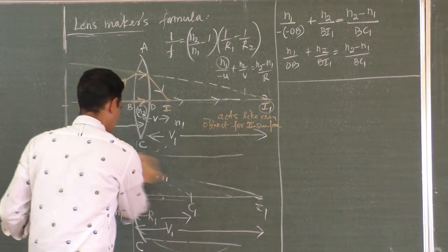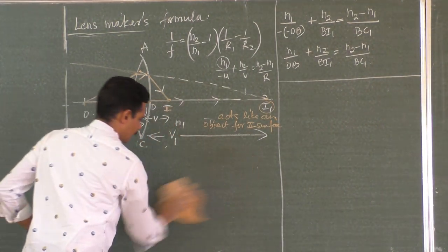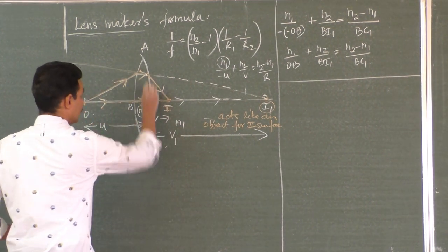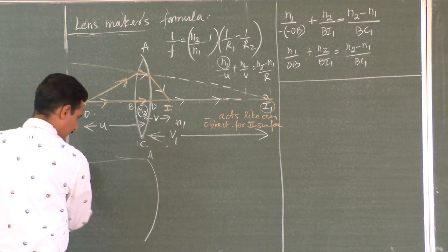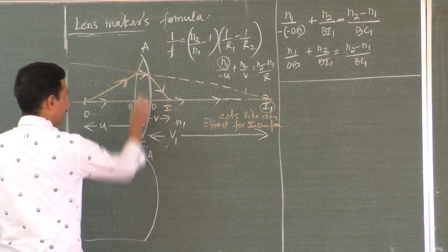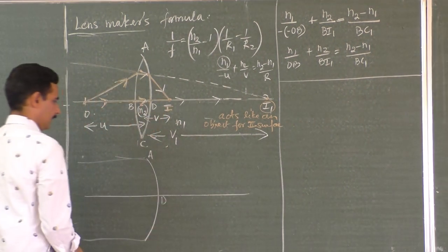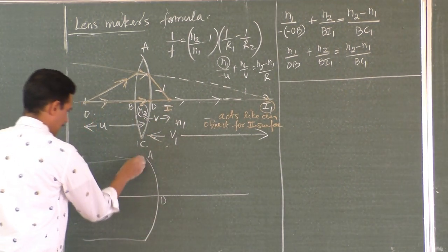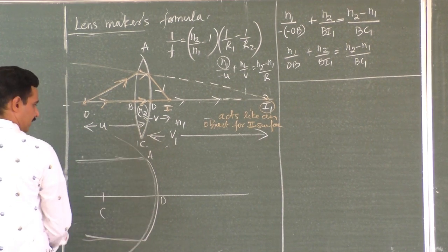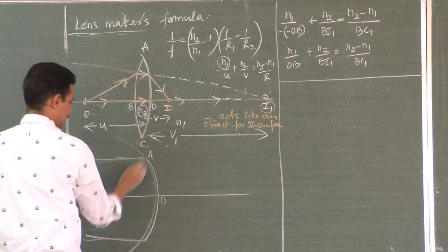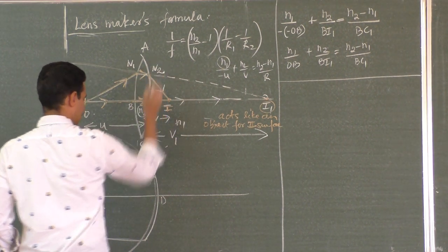Same formula for the second surface: the refractive index of the refracting medium (N1) minus the incident medium (N2), over the radius. Here everything gets interchanged — refractive index of refracting medium is N1, and this is N2. So it is N1 − N2 by radius. The radius of the second surface is on the left-hand side, so we write minus R2. Bringing the minus to the numerator: N2 − N1 by R2. This is equation 2.